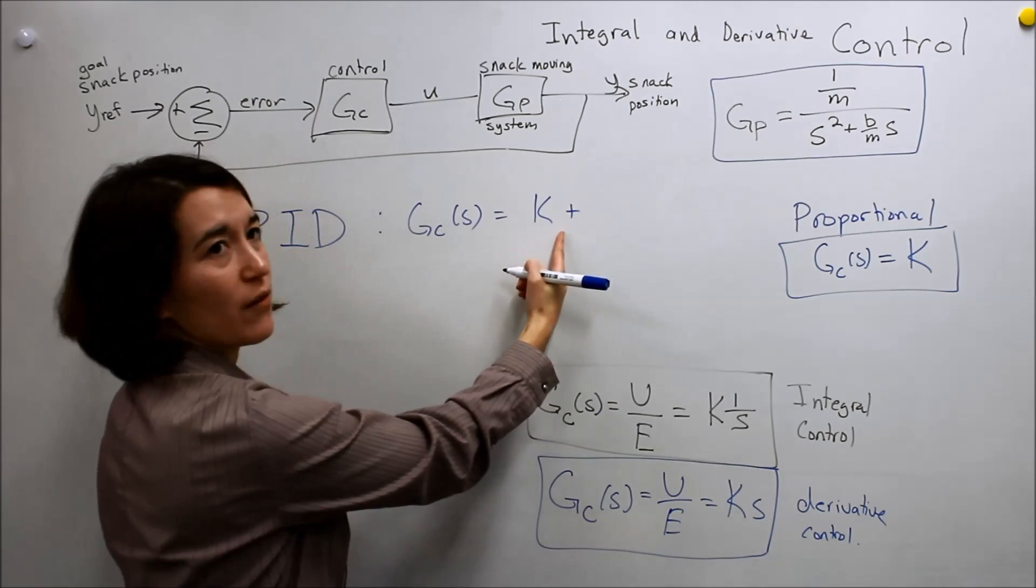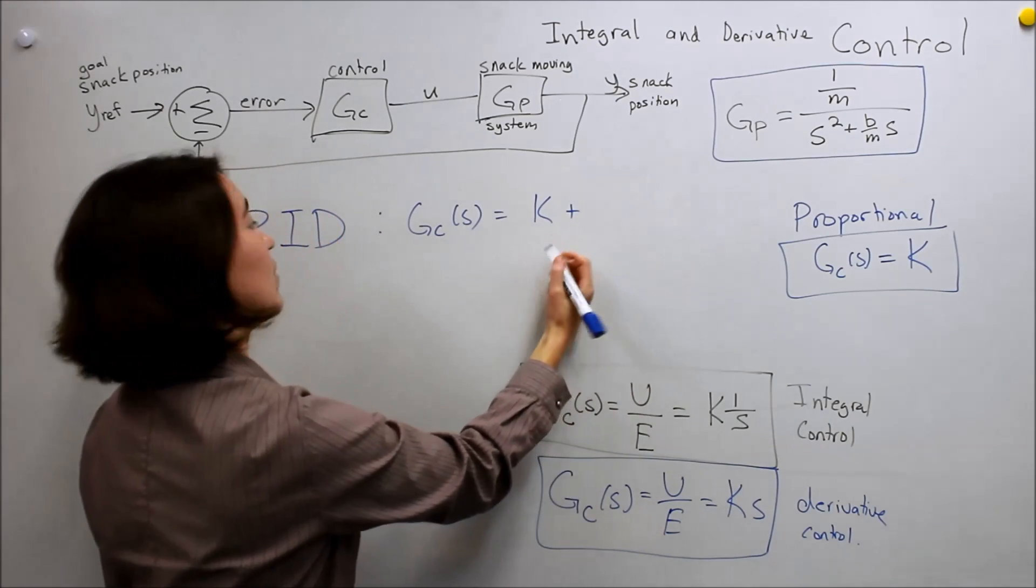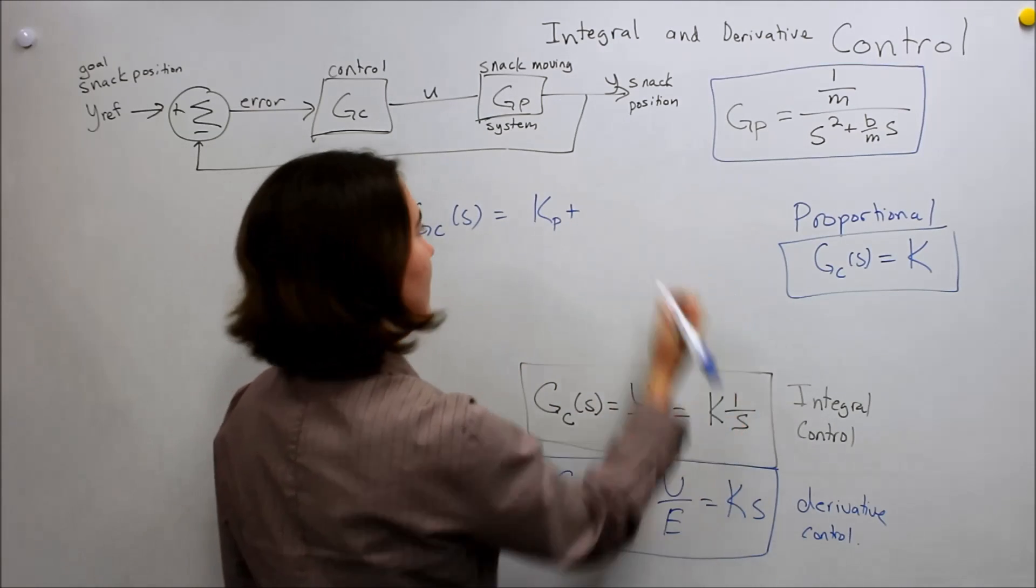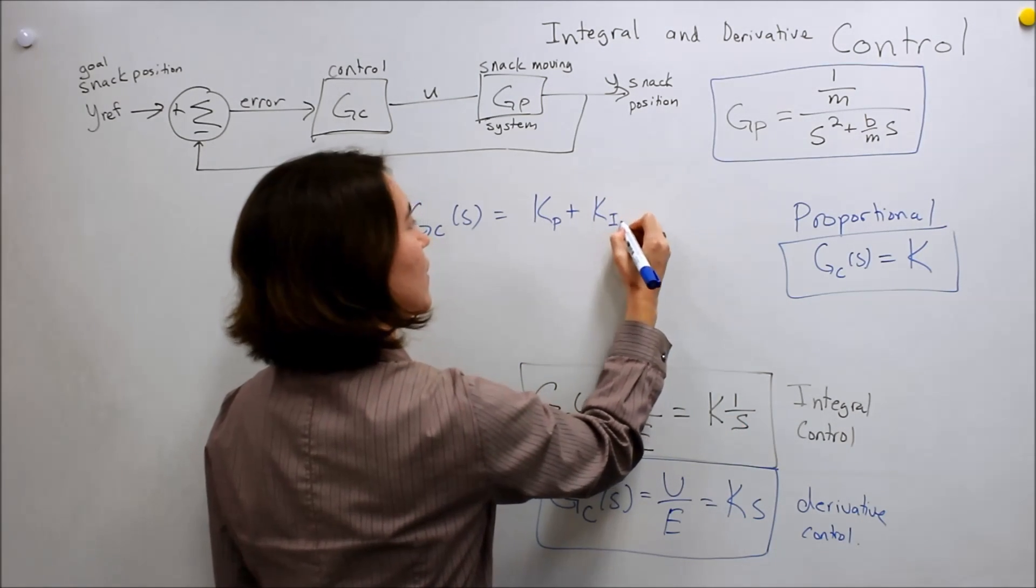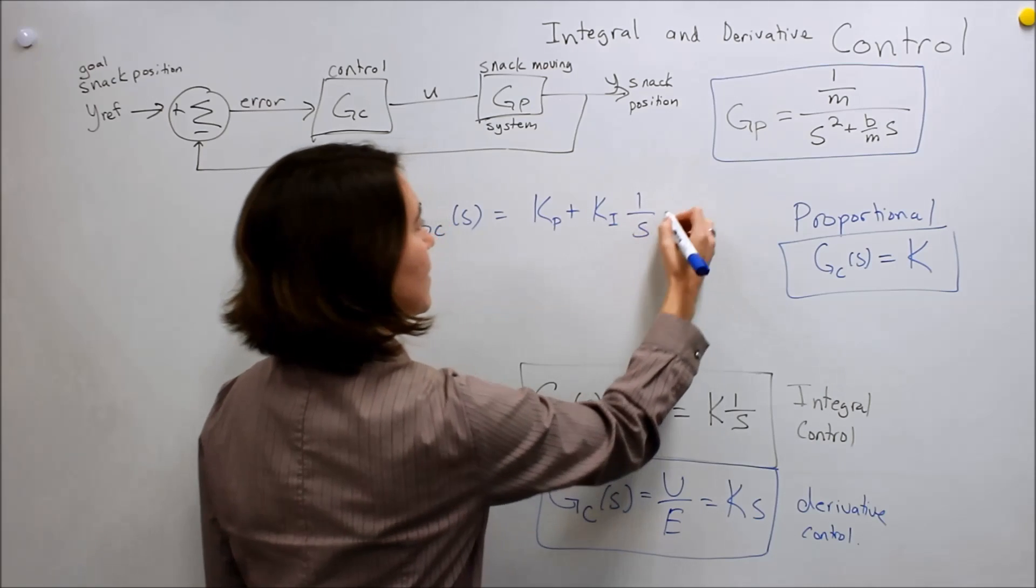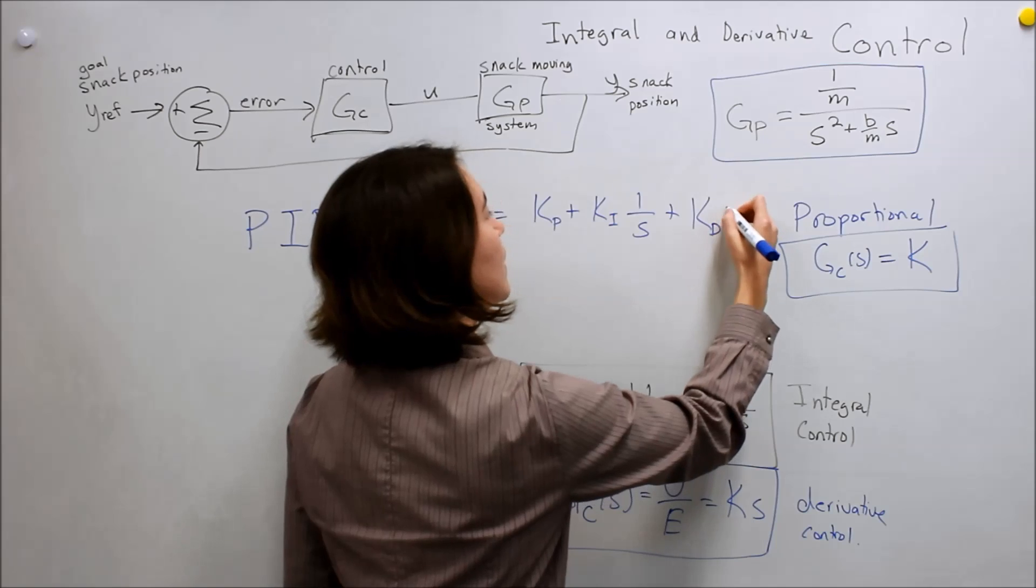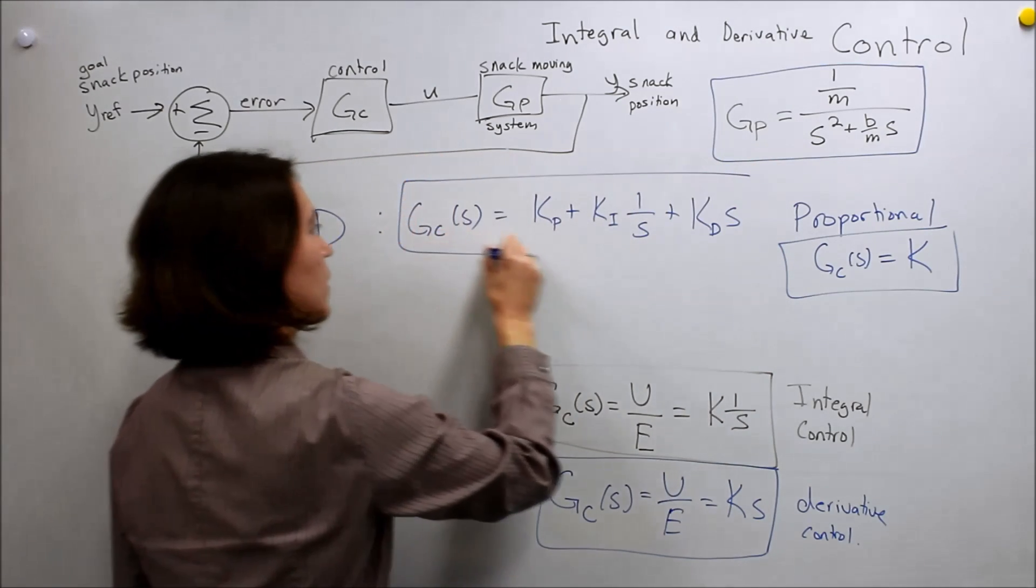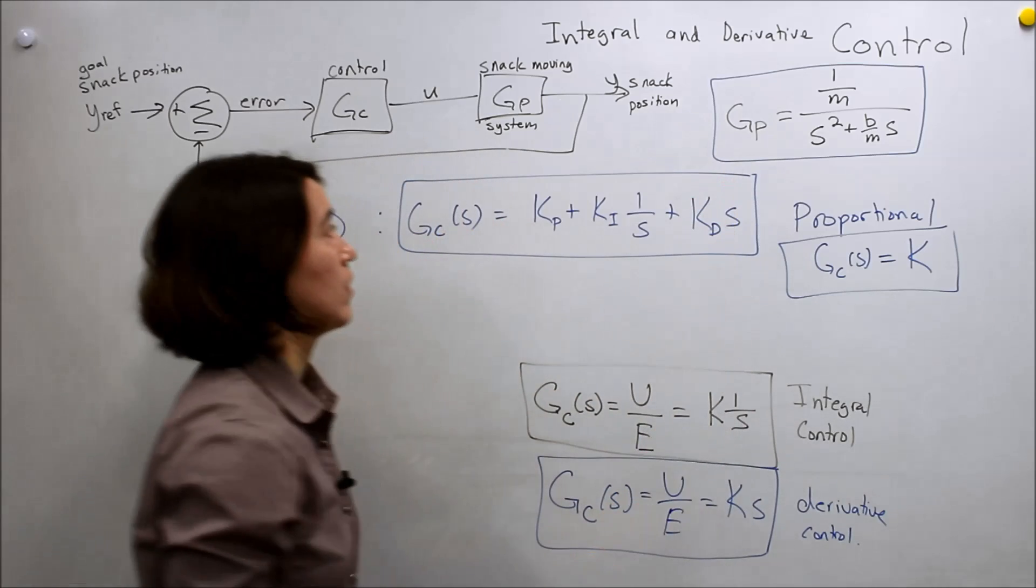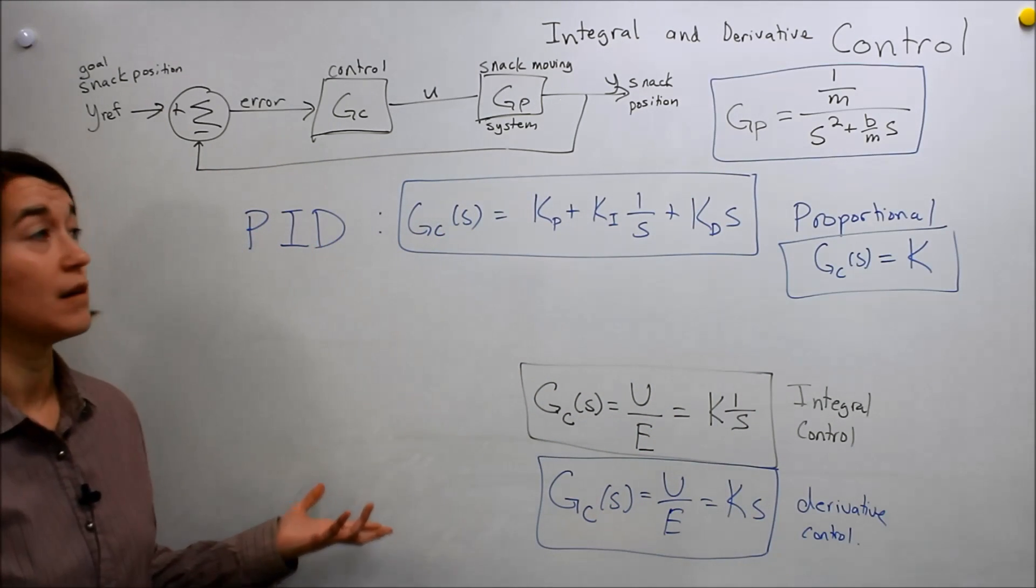Usually you qualify, if there's multiple coefficients of K, you can take Kp for proportional, and then Ki for integral plus 1 over S, plus Kd, the derivative, S. So this would be your transfer function for a PID control.